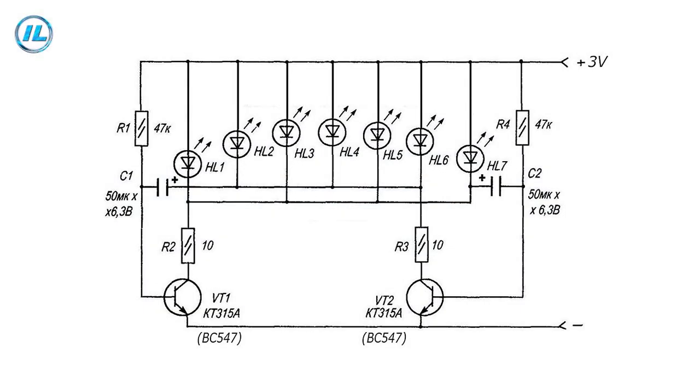The schematic diagram of the flashing light is very simple. This is a regular multi-vibrator. Three LEDs are connected to one side of the multi-vibrator, and four to the second. You can download the diagram of this device in the telegram group. The link to the group will be in the description under this video and in the first comment.